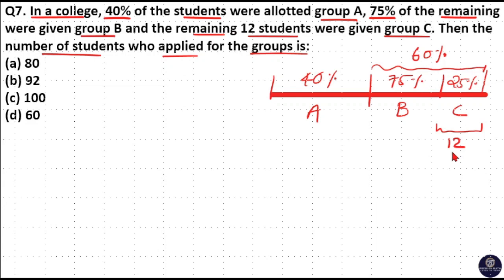That is, group C students are 12 in number. So that means 25% of 60% is 12. Then, here you can see 25% of 60 by 100 is 12.